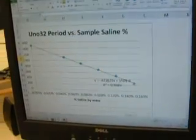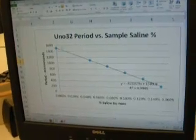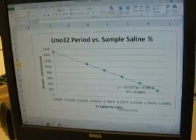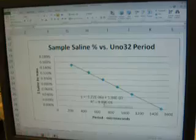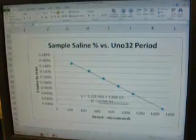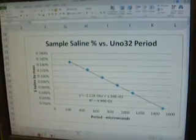This is not real data, but you will get a resulting graph, and these are the important graphs. You'll be graphing period versus mass, percent saline by mass, and then the opposite of that, saline versus period. You'll have to decide which one of these are important for your calibration correction inside your program.